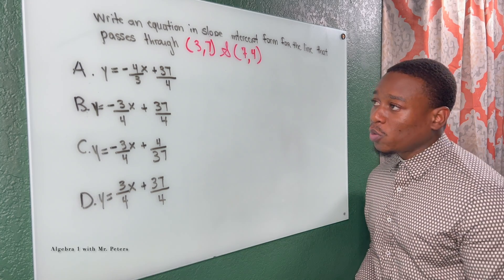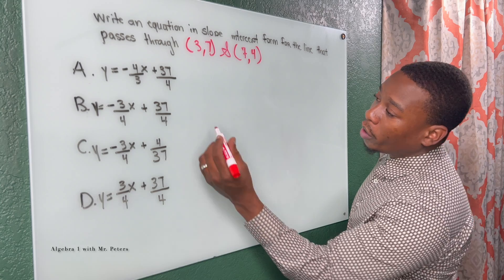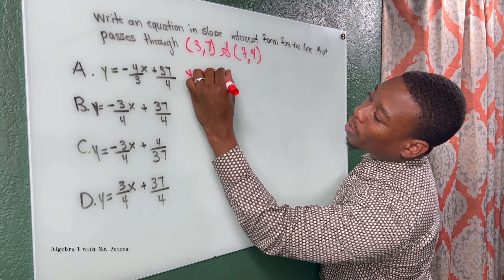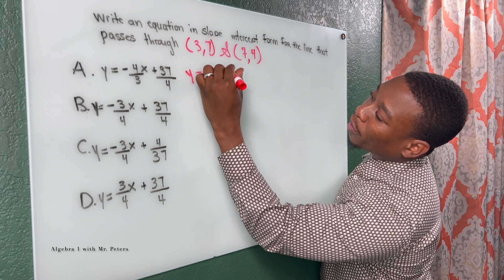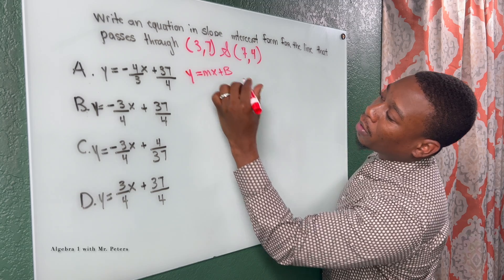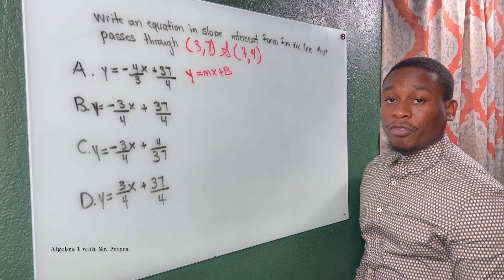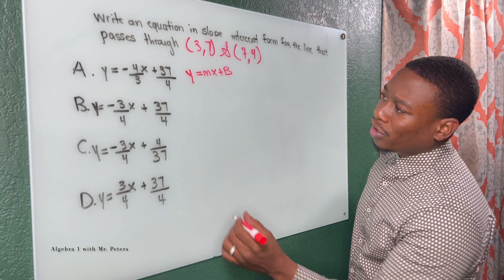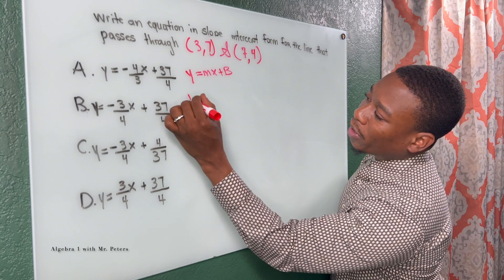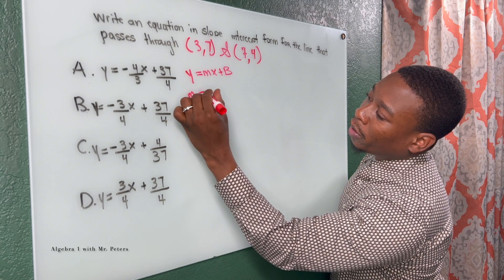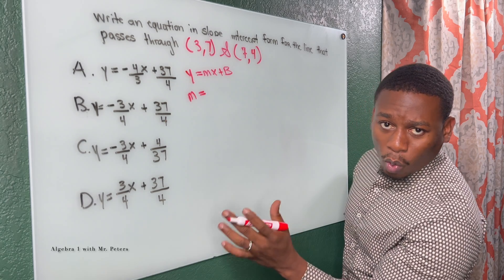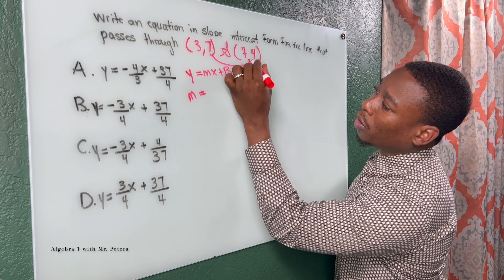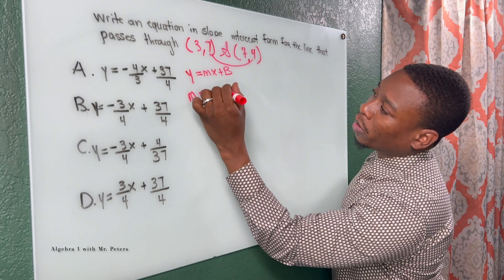There are a few things we need to know. One, it needs to take the form of y is equal to mx plus b. The first thing we need to do is figure out what exactly is the slope, so we have to use that formula: m is equal to y2 minus y1 divided by x2 minus x1.